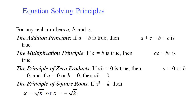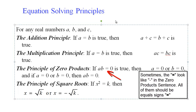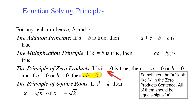Once we've moved things around we have what's called the zero product principle. This tells us that if we have the product of a and b equaling zero, then one or both of them must be equal to zero. It works in both directions — if their product is zero then one or both is zero, and conversely if one or both is zero then their product is zero. It is an if and only if idea.